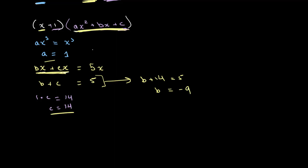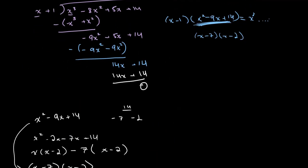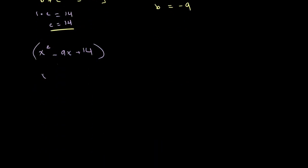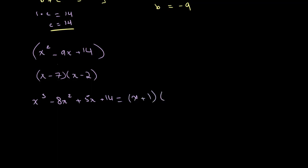Plugging in a = 1, b = −9, c = 14 gives the quadratic x² − 9x + 14. Factorizing this gives (x − 7)(x − 2), matching what we found before. So the final answer is x³ − 8x² + 5x + 14 = (x + 1)(x − 2)(x − 7).